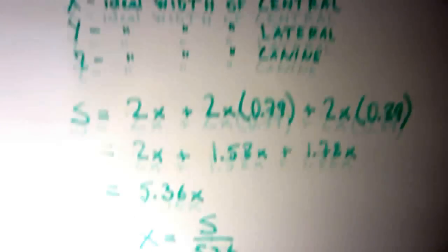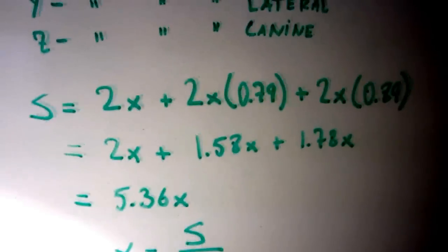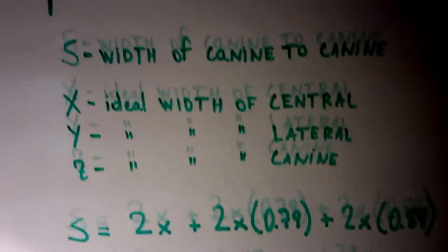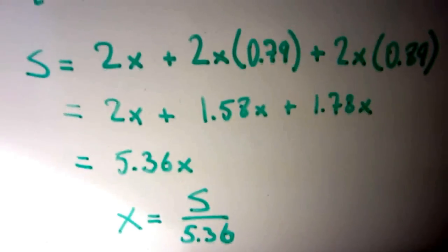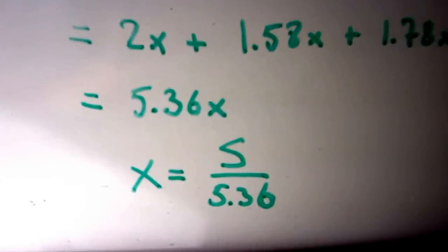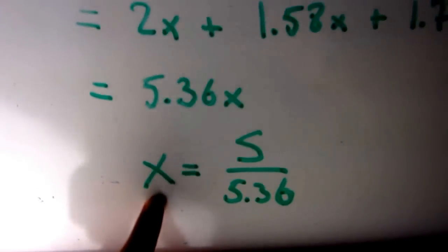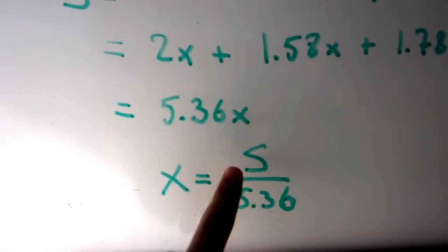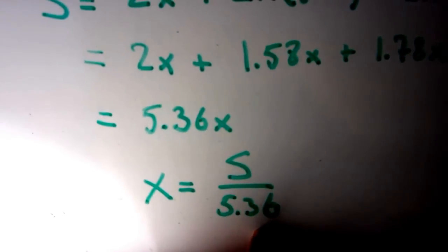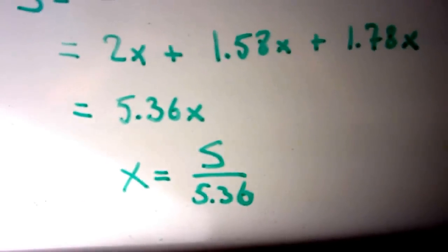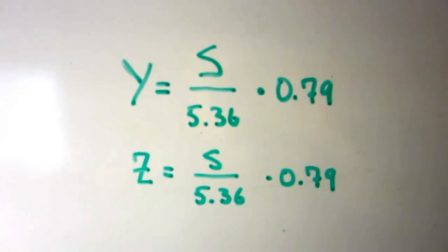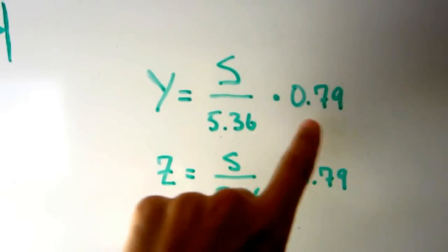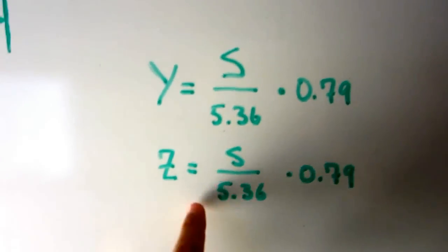So here we go. Based on what I just told you, this is one of the formulas I came up with to figure out the appropriate width for X, which is the width of the central. From this you can see — just my little calculations — you arrive at this value where X is your width of the central incisor, S is the length of your arch from distals of canines, divided by this value. This gives you the ideal width of X. The ideal width of the lateral is going to be X times 0.79, and same thing for the canine.